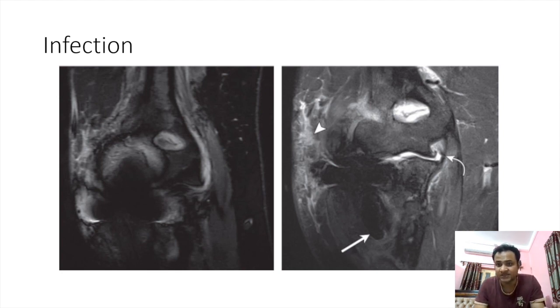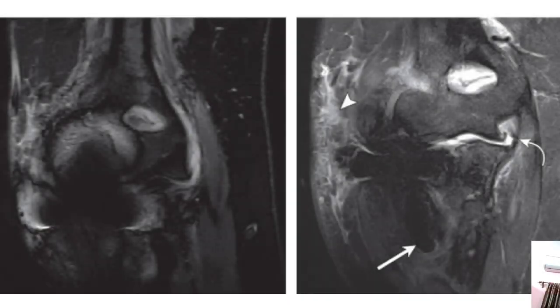Infection is another complication — the key is not to confuse other complications with infection. Infection will show subcutaneous edema on STIR sequences, joint effusion, and marrow edema or edema in surrounding bones. These findings together point toward infection rather than other complications discussed earlier. Infection needs urgent action; we must inform the clinician and suggest proper antibiotic usage.